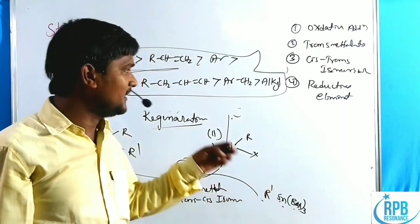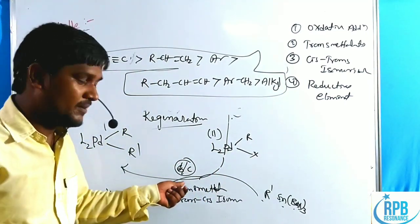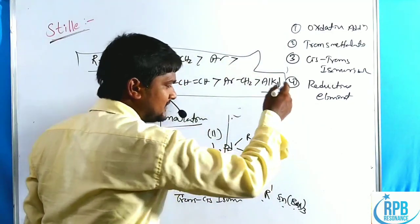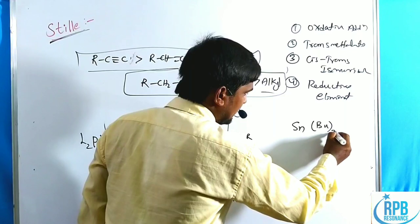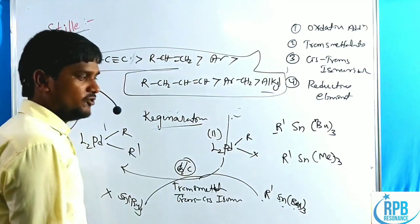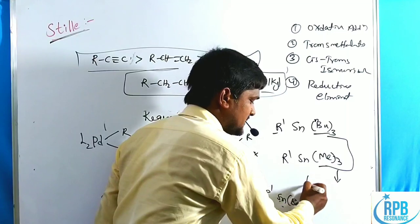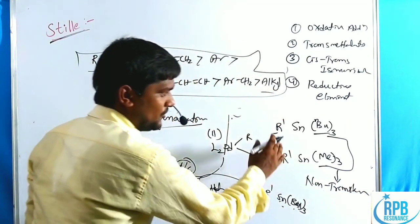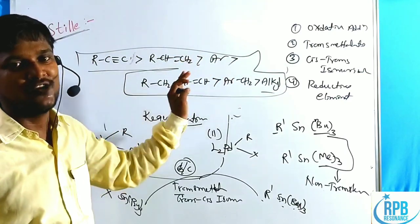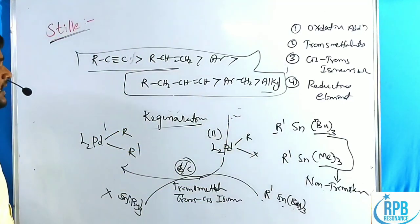If the stannous group carries both alkyne and alkyl substituents, the alkyne is preferentially transferred from tin to palladium. In cases of Sn(n-Bu)₃ or Sn(Me)₃ carrying R' as alkyne, alkene, or aryl compounds, the n-butyl and methyl groups are non-transferable. They cannot transfer from tin to palladium. This is the major selectivity of the Stille cross-coupling reaction.